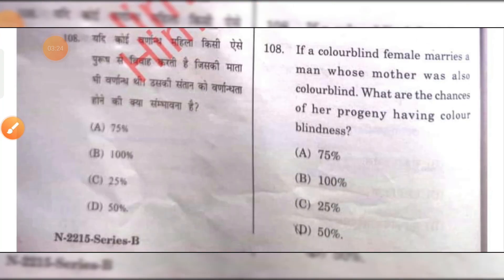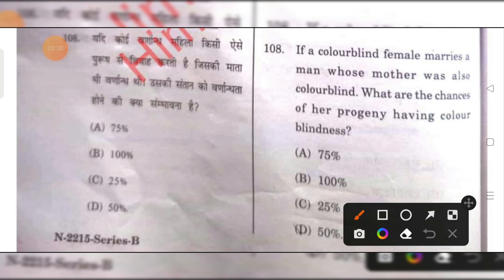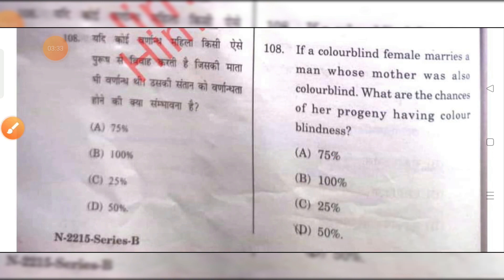If a colorblind female marries a man whose mother was also colorblind, what are the chances of her progeny having colorblindness? That is 100%.